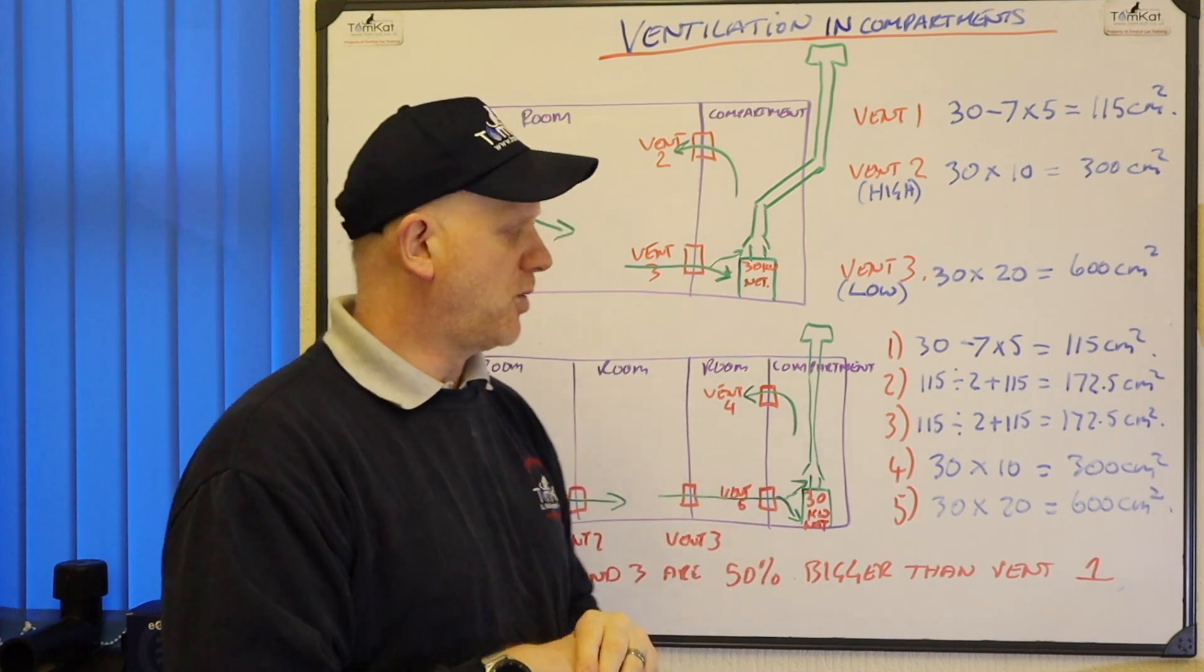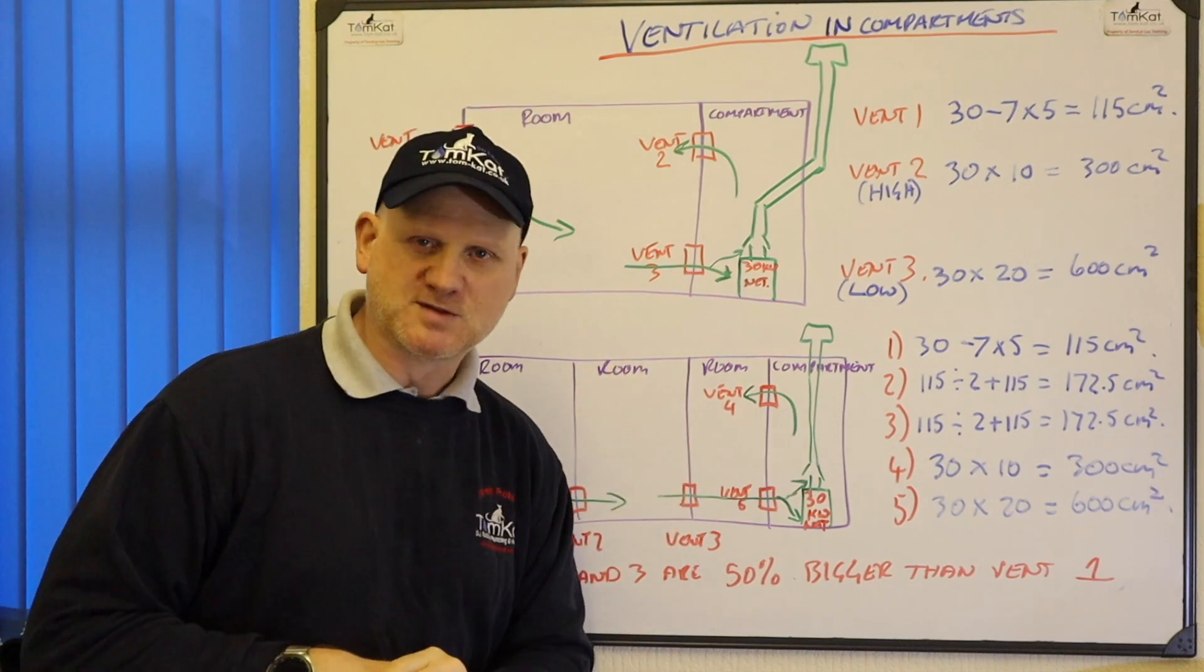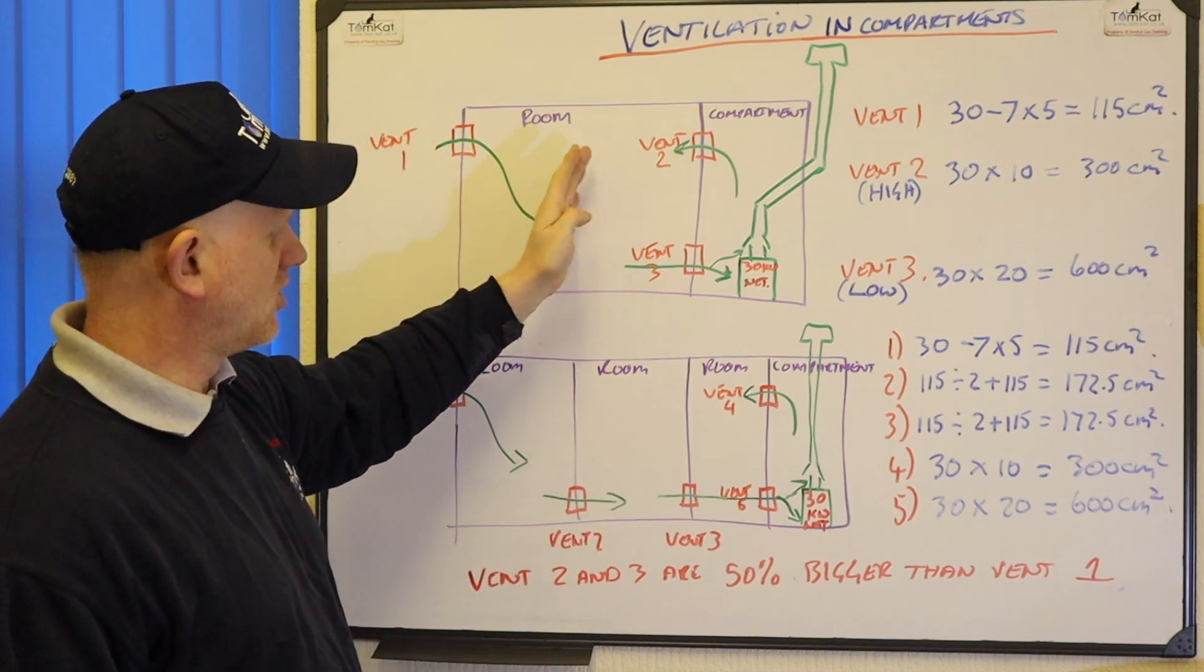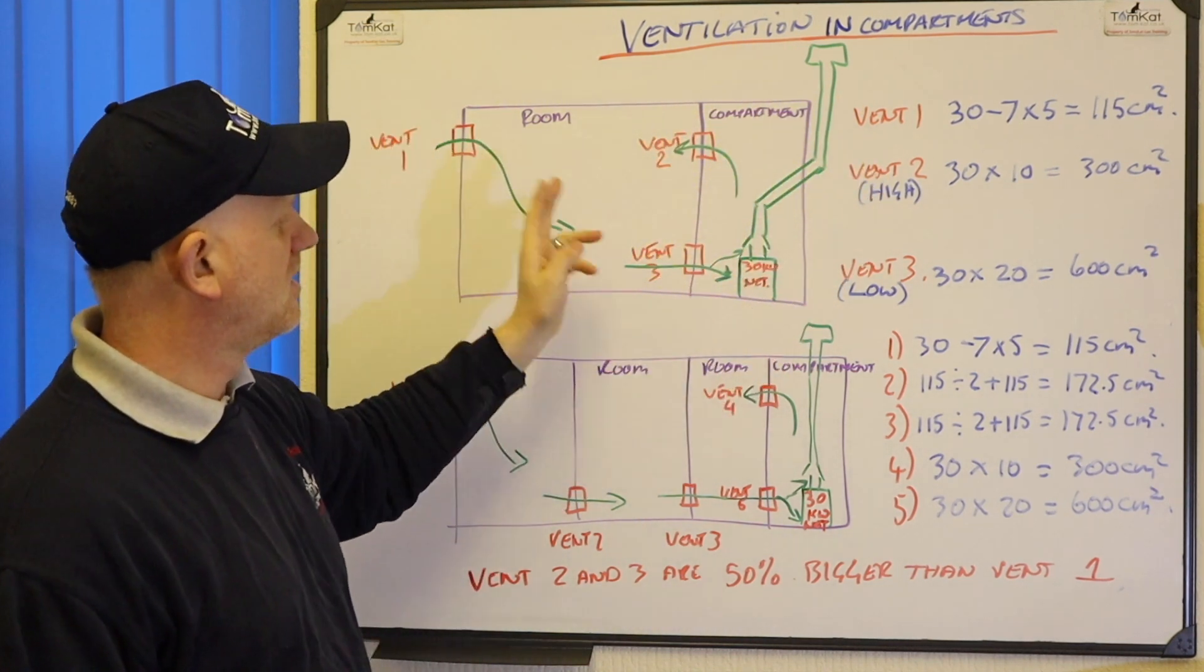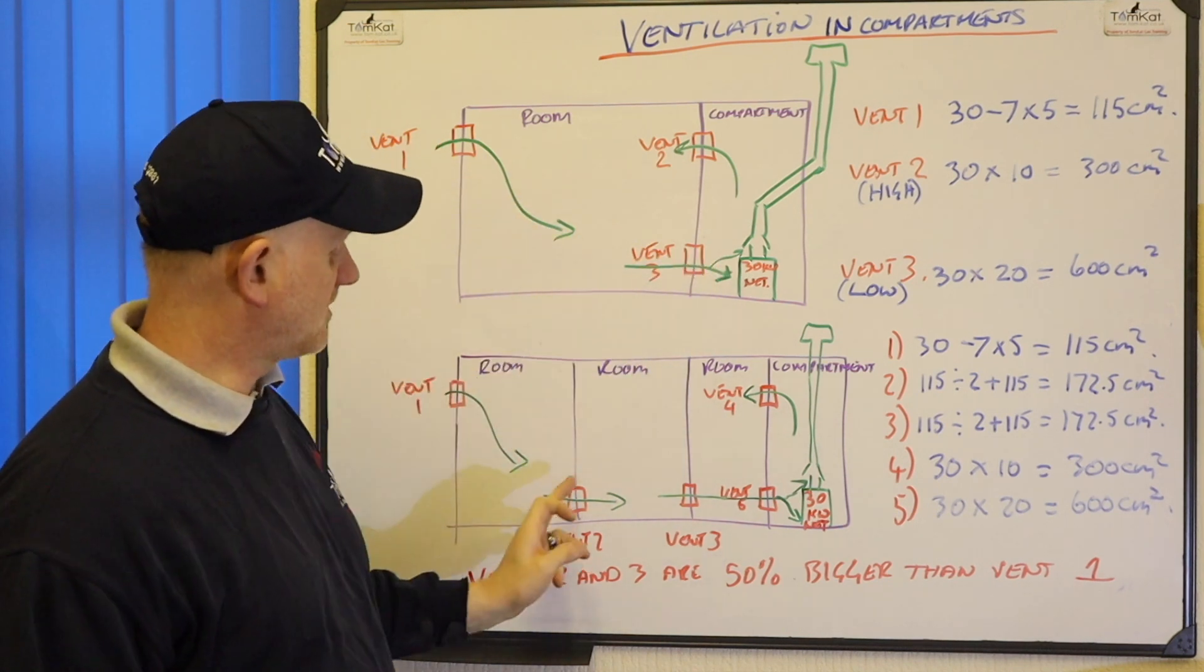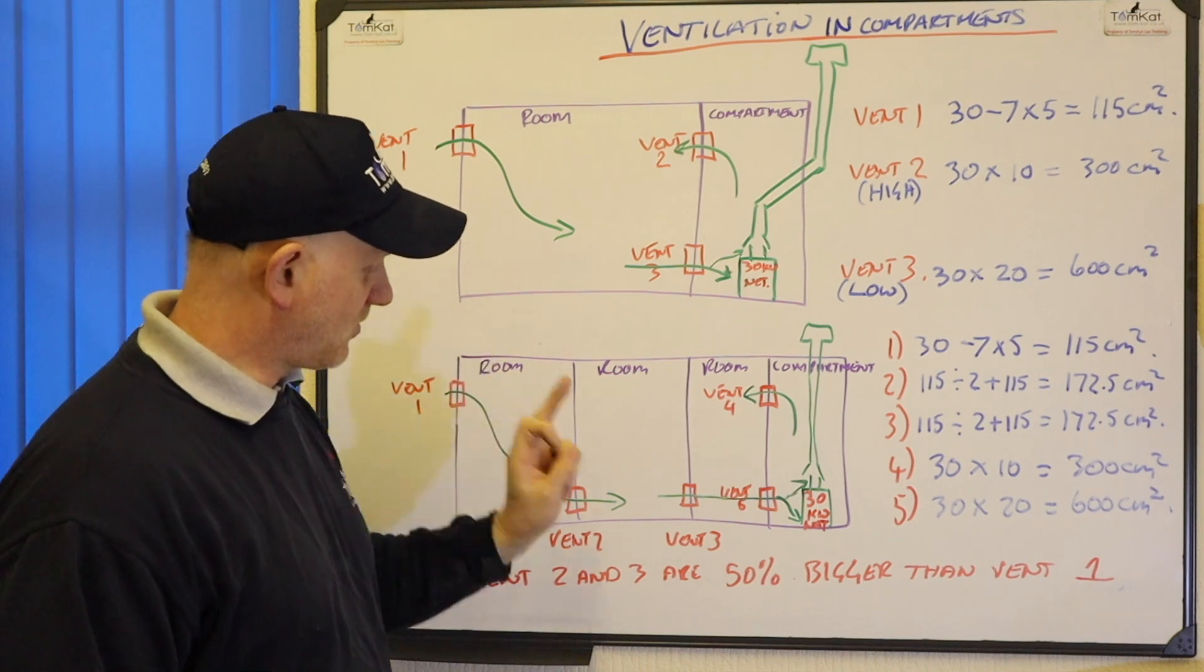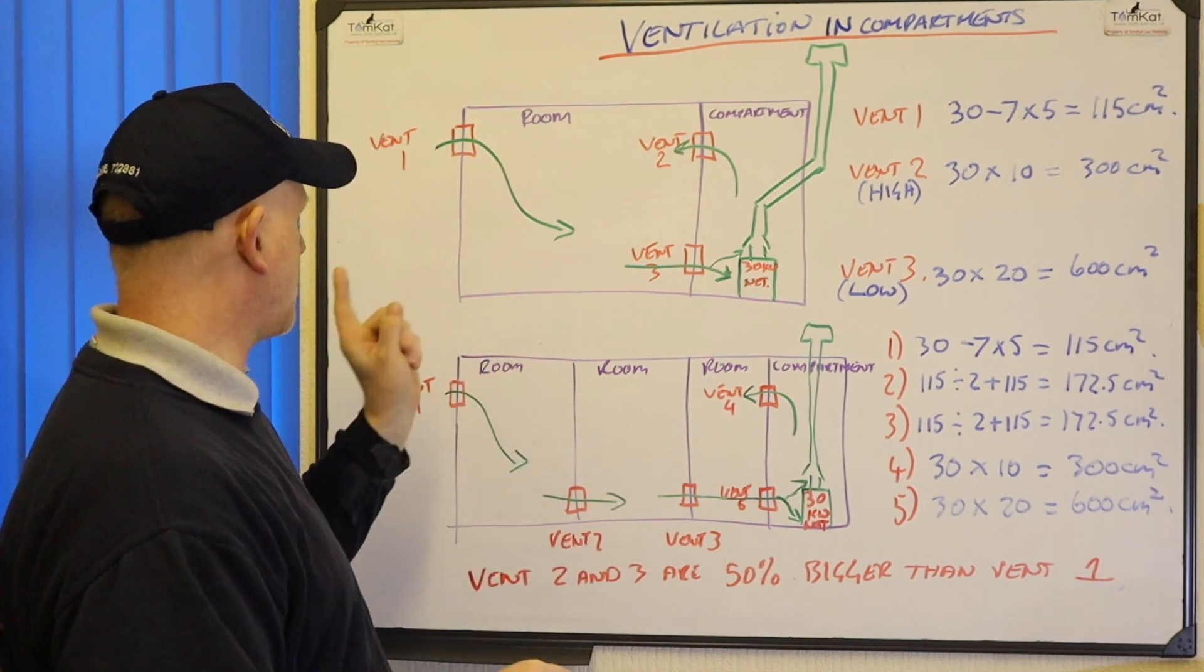Let's up a notch and look at it passing through two or more rooms. So if it passed just through one room like we did before it would be this one. If we pass through two rooms and then into the compartment we just need the vents to be the same. So passing through, but because we're going through two or more rooms, vents 2 and 3 need to be increased by 50% from the outside vent.